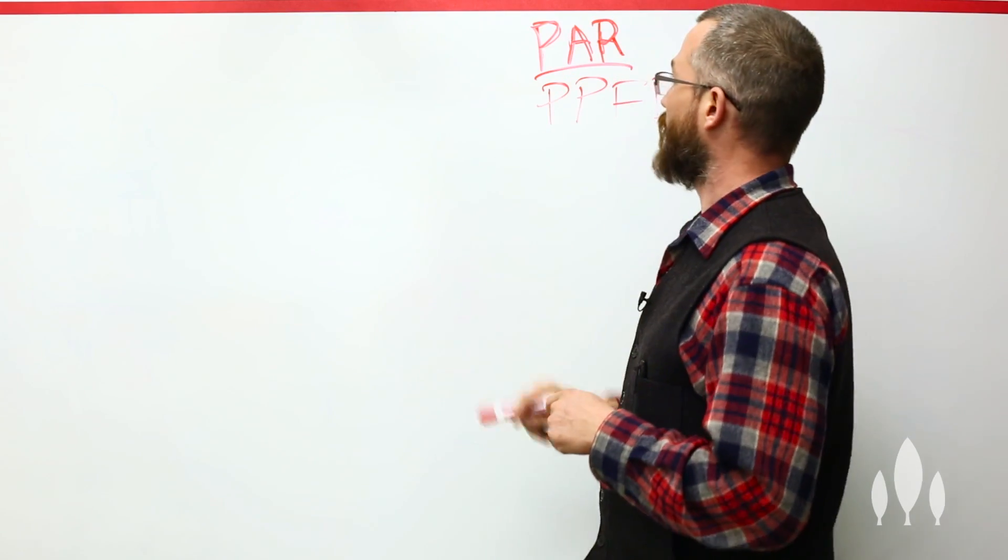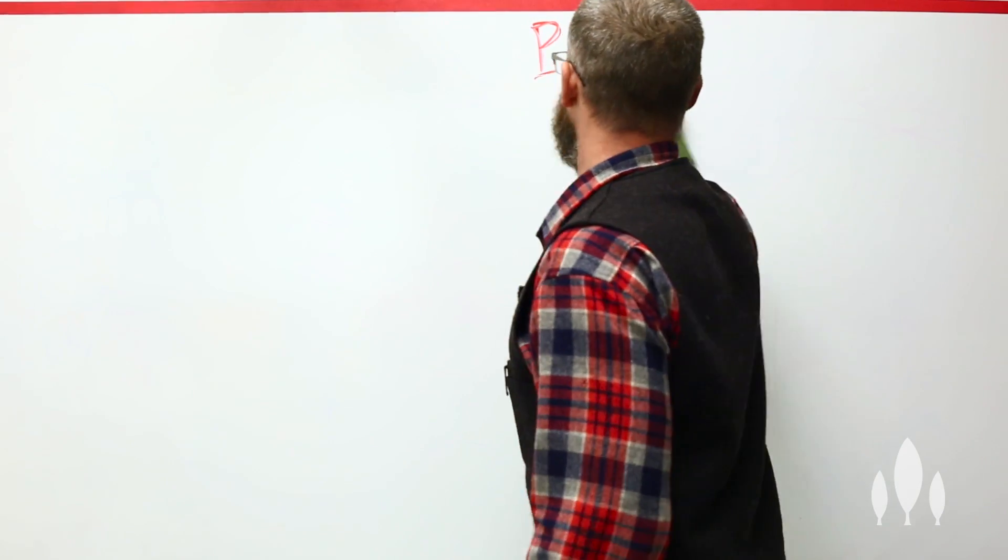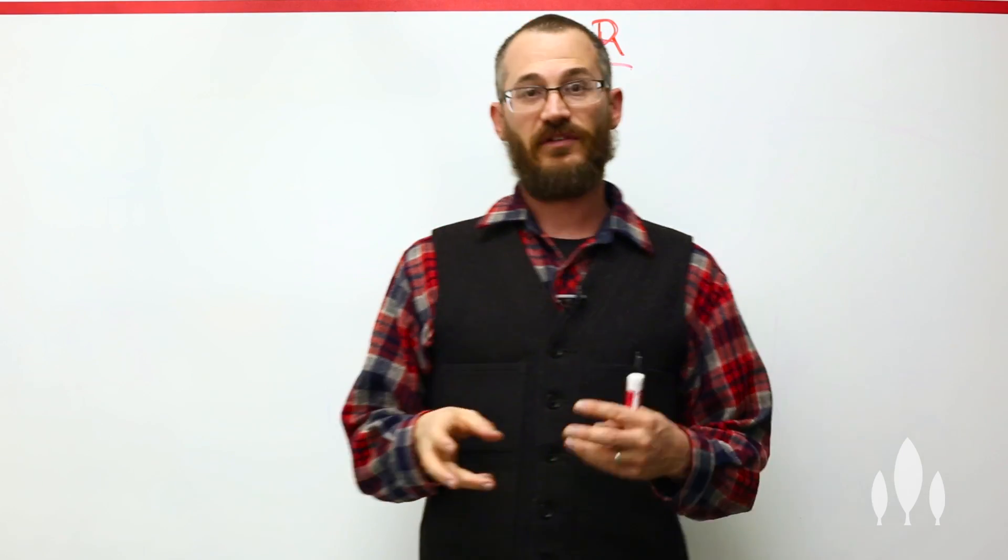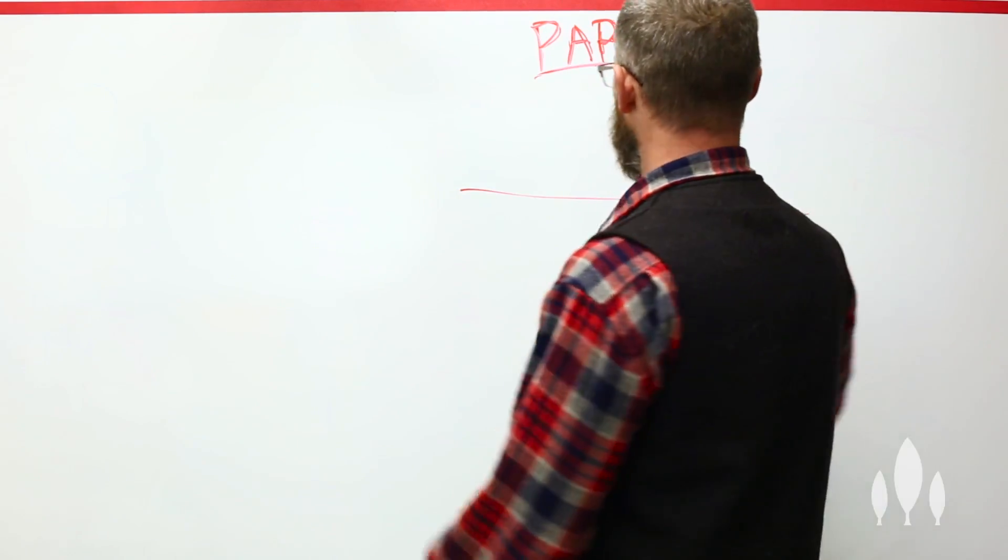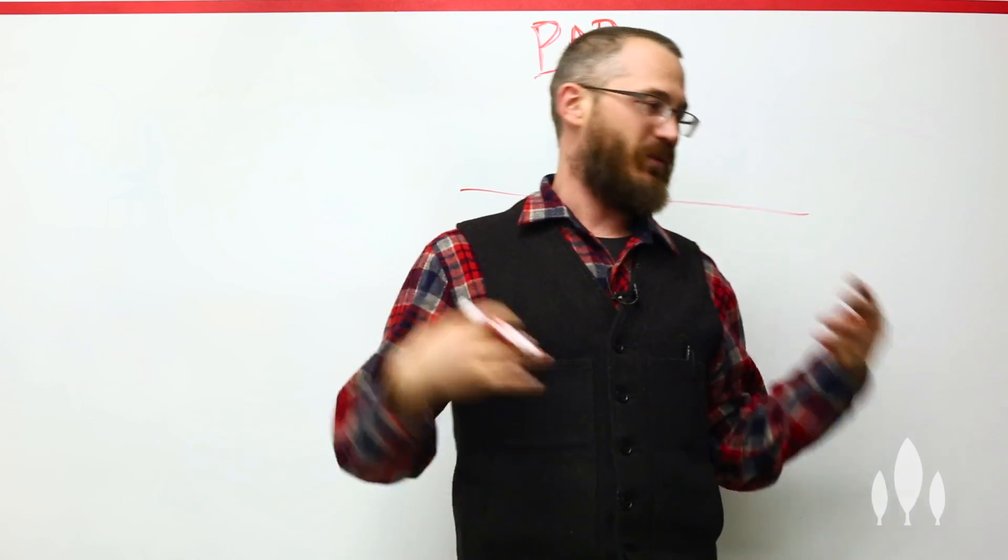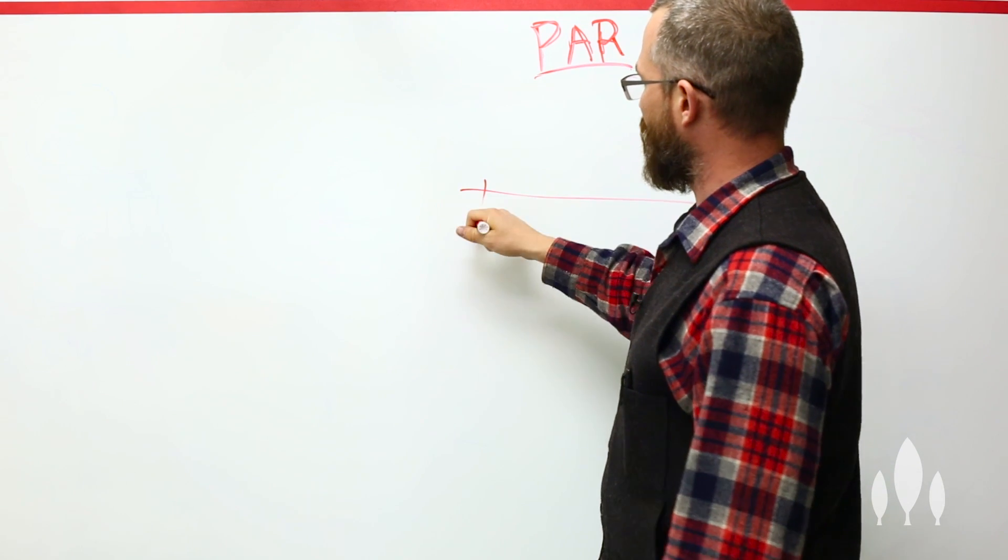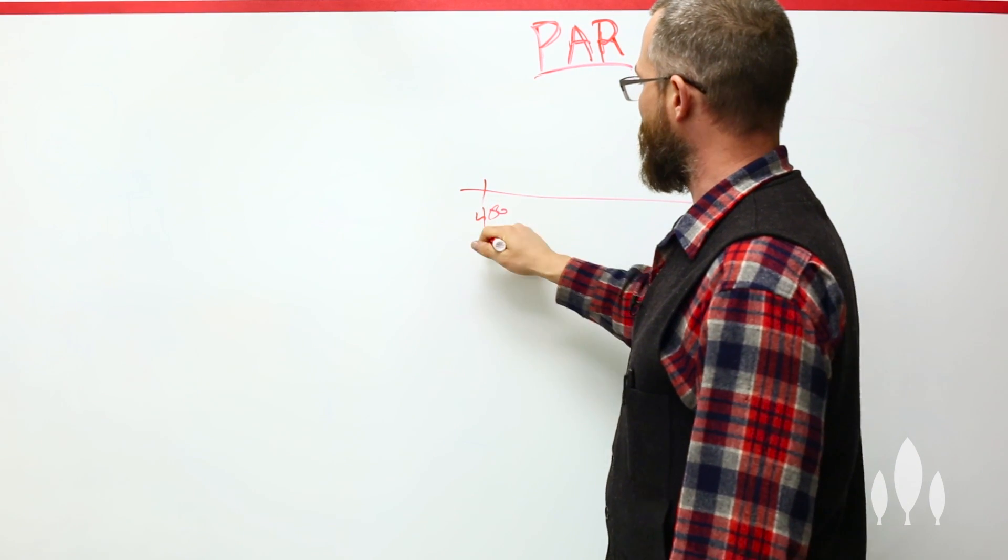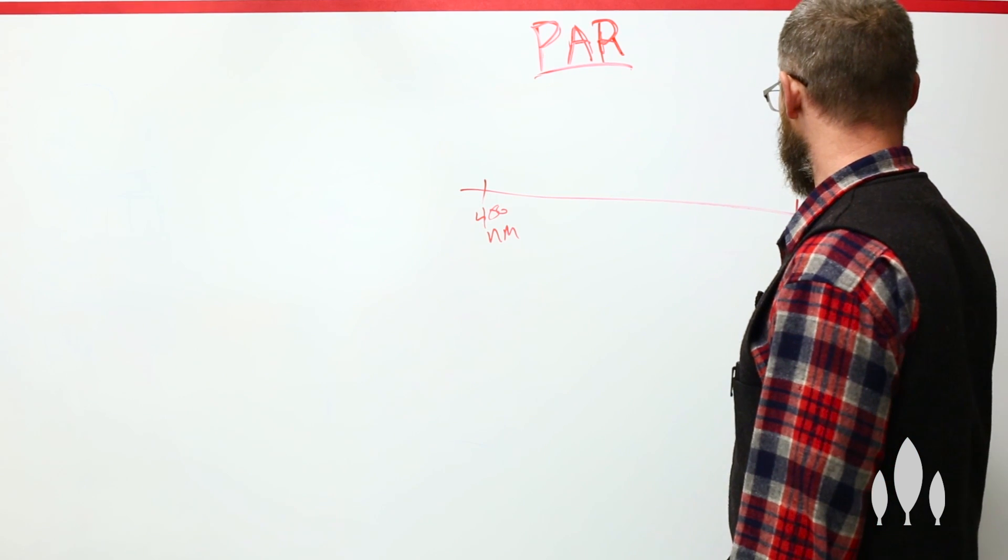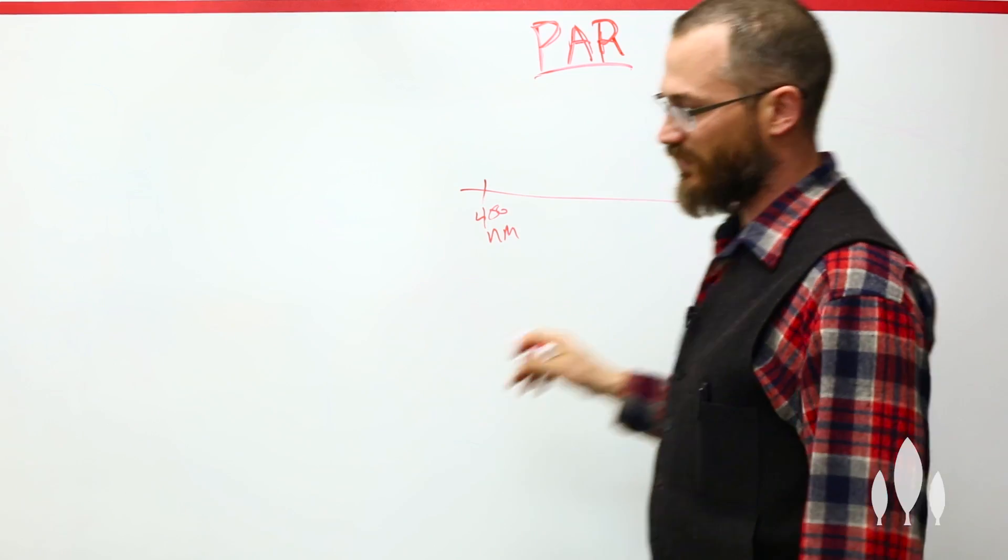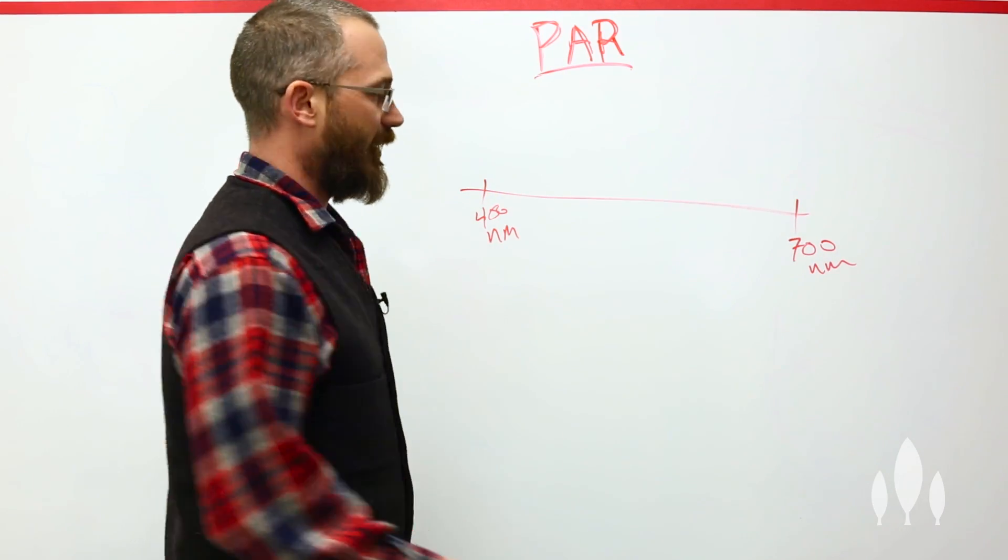PAR is the measure of the photons that are hitting a plant that the plant can actually use. So in the visible spectrum, this is the light that we can see, it also happens to be a lot of the same light that plants use. It starts somewhere down here around 400 nanometers and ends somewhere up here around 700-ish nanometers. This is generally the range of PAR within the visible light spectrum.